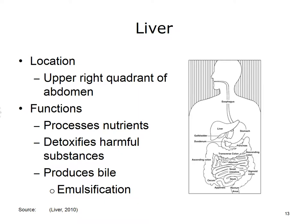The liver is located in the right upper quadrant of the abdomen. The liver processes nutrients, helps in the detoxification of harmful substances, and produces bile. Bile aids in breaking up large fat globules into smaller droplets. This process is called emulsification.